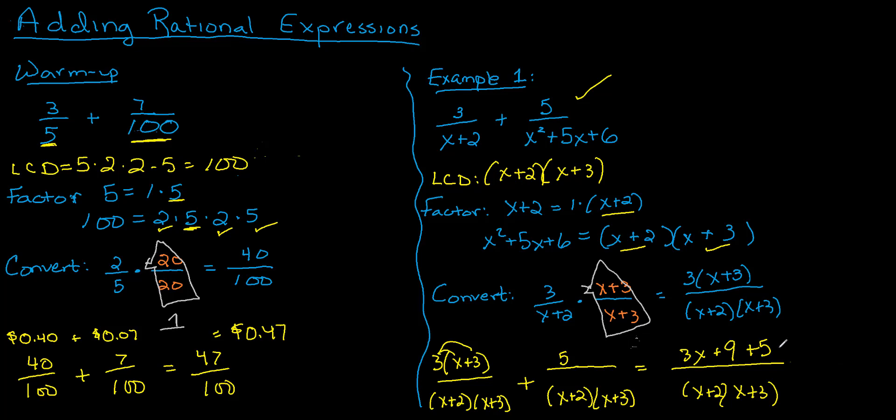We can clean this up a little bit further. In the numerator, I only have 3x, there's nobody else I can combine with 3x. And in terms of the constants, I've got 9 plus 5, that gives me 14. And in the denominator, I have this LCD.